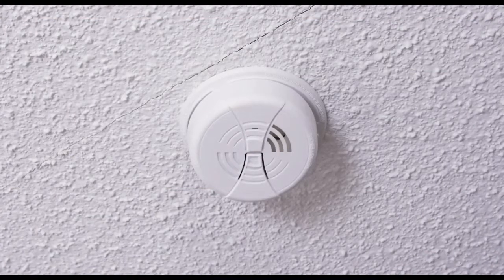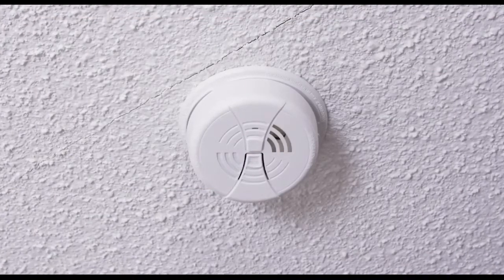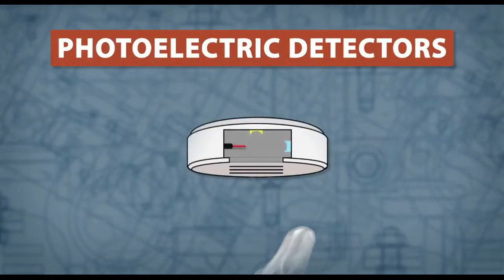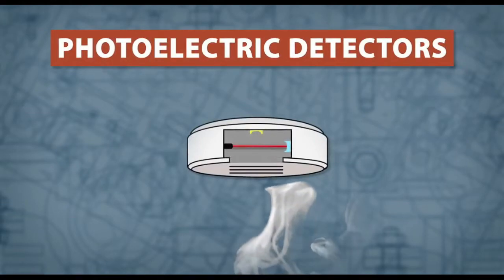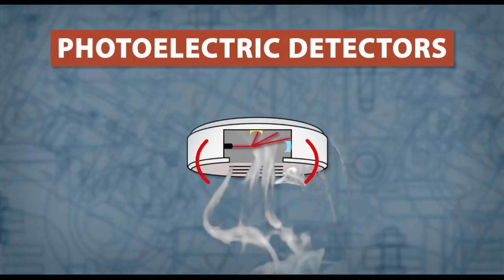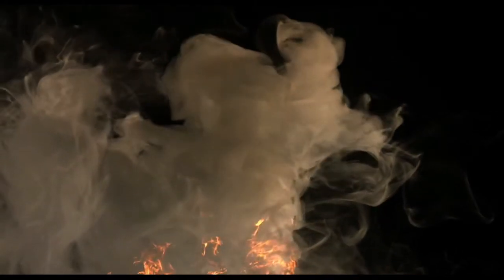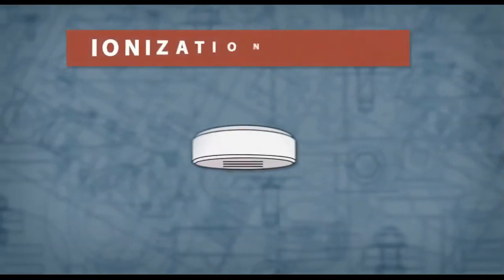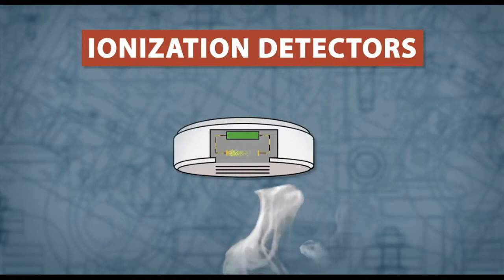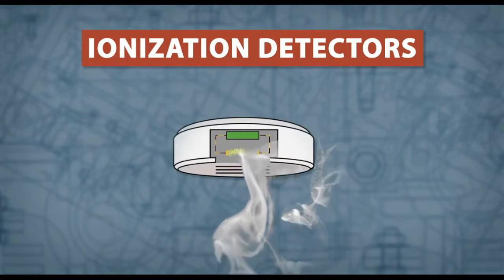There are two main types of smoke detectors available. Photoelectric detectors work by using a light sensing chamber. As smoke enters the chamber, it disrupts the path of a laser and triggers the alarm. These detectors are better at sensing slow burning or smoldering fires. Ionization detectors use two electrically charged plates to ionize the air in the sensor. When smoke enters the detector, it disrupts the flow of the ions and triggers the alarm.